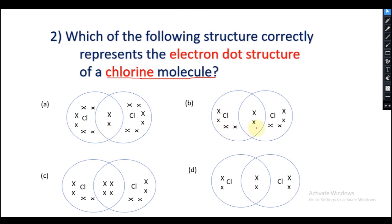So let us try to find out the answer. Checking the electrons present: 2, 4, 6, and 8 for the first chlorine, and 2, 4, 6, and 8 for the second — this looks like the correct answer. Let us check the other options. The next option only shows 2, 4, 6 for each chlorine — so that is the wrong option.